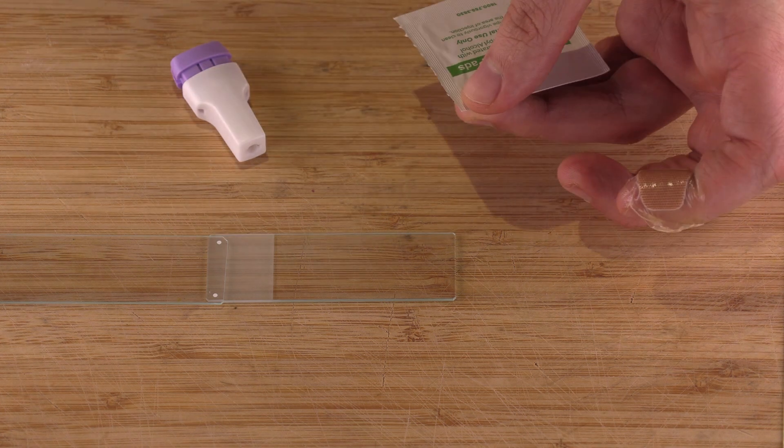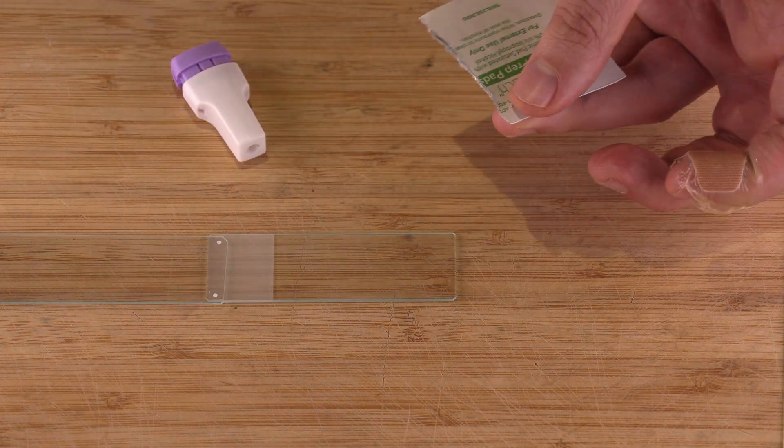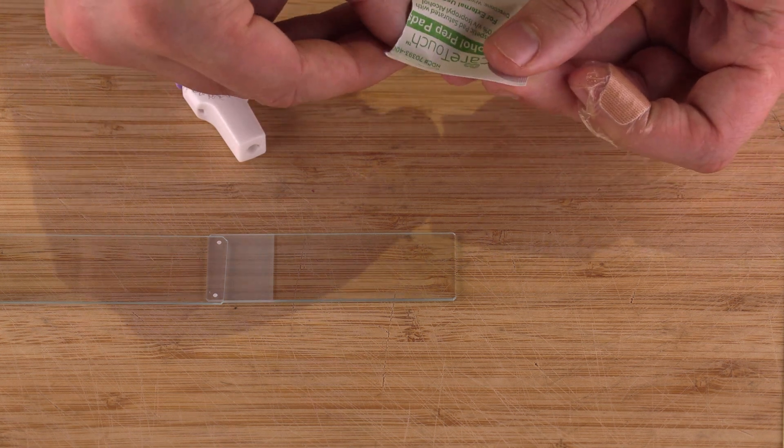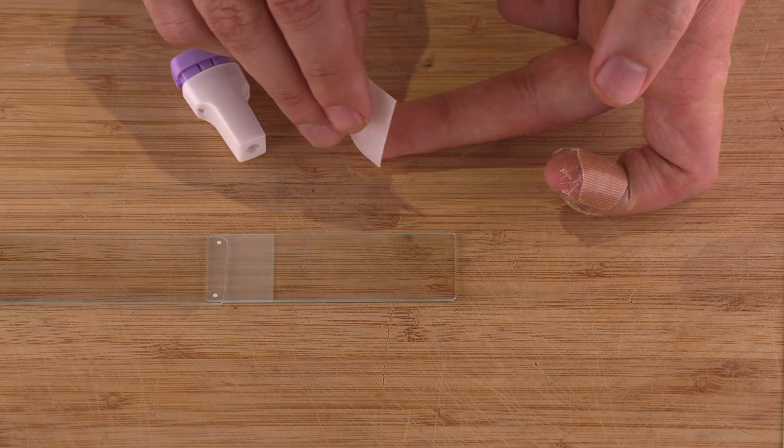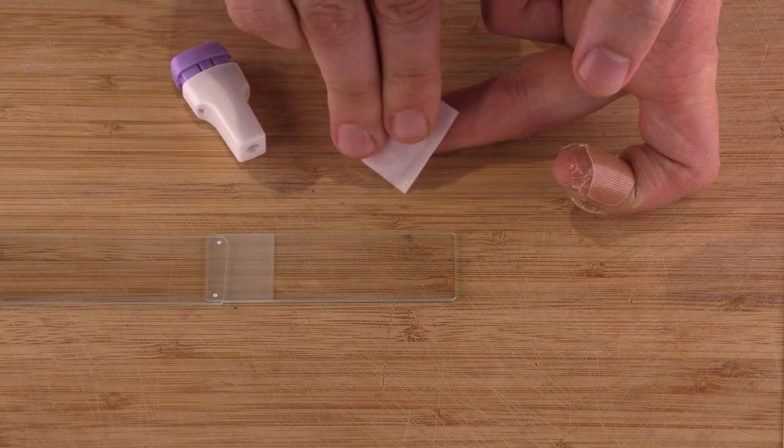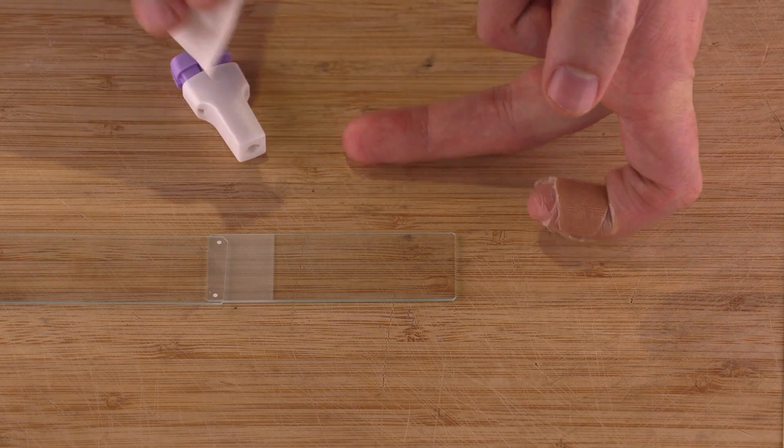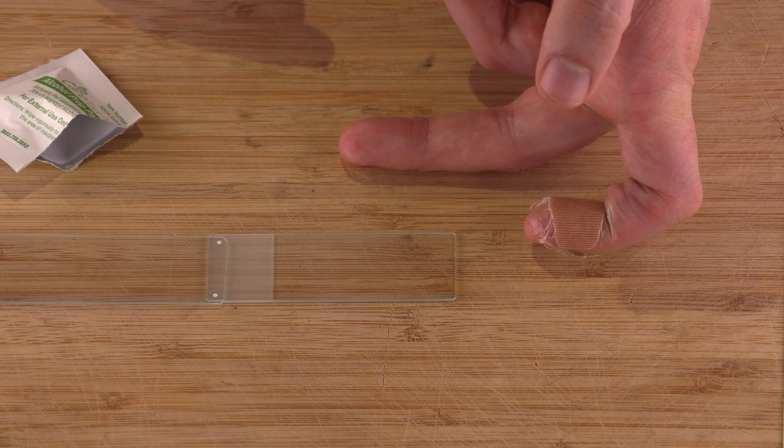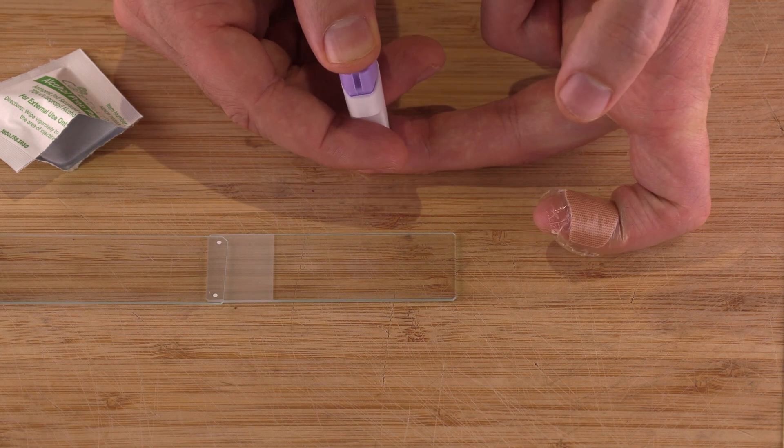Now what I'm going to do is I'm going to use the alcohol wipe that's included in the kit and I'm going to make sure that my finger is nice and clean and I'm not going to get an infection. And then I prepared a second alcohol wipe right next to this. You'll see why in a sec.